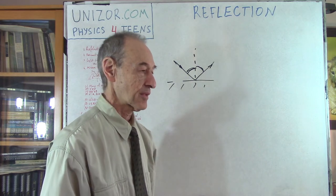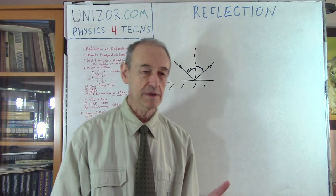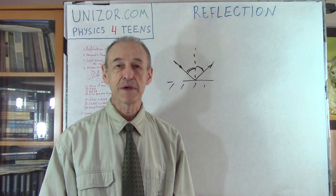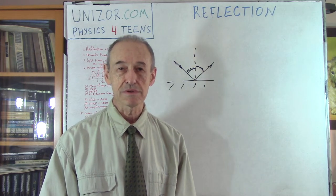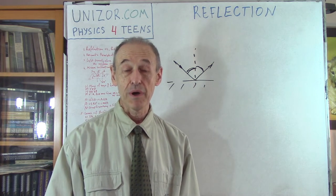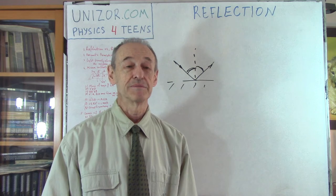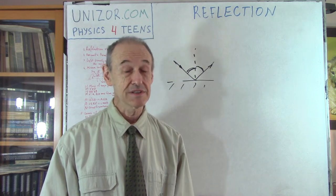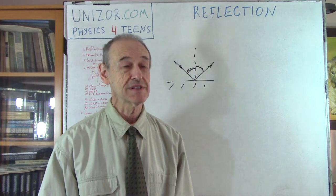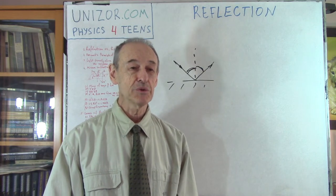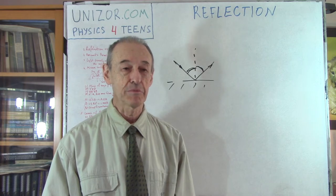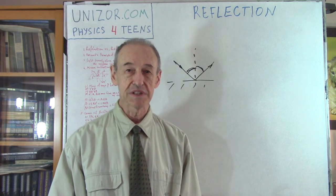I was thinking about this and I came up with a certain explanation which happened to be basically invented by the famous French mathematician Pierre Fermat in 1662 — in the 17th century. It is known as Fermat's principle of least time.